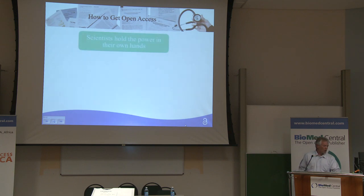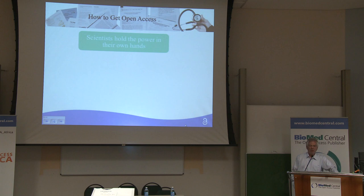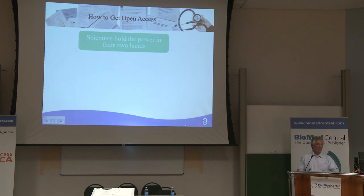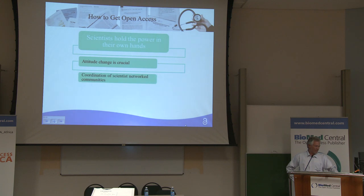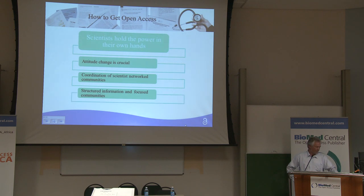How do we get open access? I think scientists hold the power in their own hands. Even if your boss says you have to publish in a certain journal to get promotion, everybody does have the power to publish where they want. If you are many and you say we want to publish open access, you can pull it off. But what is necessary is an attitude change and a coordination of scientists' networked communities, and especially structured information.